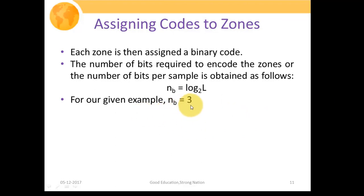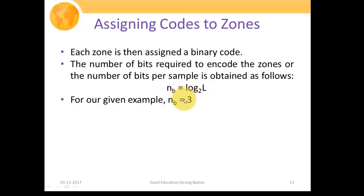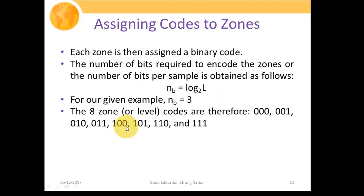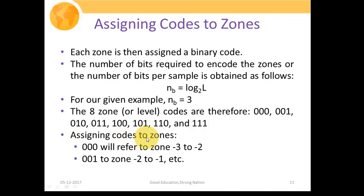So the eight zones or levels are coded as 000, 001, 010, and so on up to 111. We assign those codes to the zones: the zone between minus 3 to minus 2 gets code 000, then minus 2 to minus 1 gets 001, and so on.